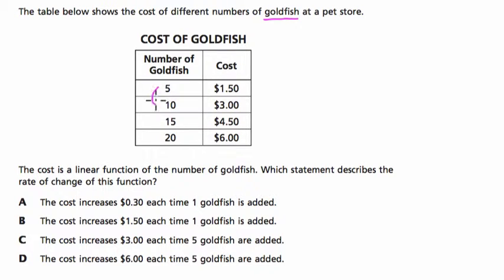So it seems to me that every time you buy five new goldfish, plus five, our cost is going up by $1.50. So it's a linear function. It's constant.